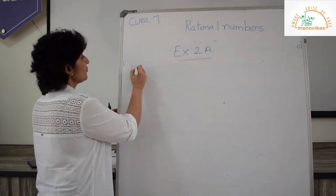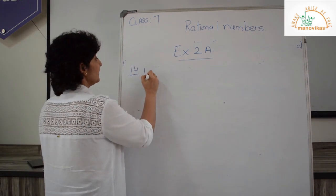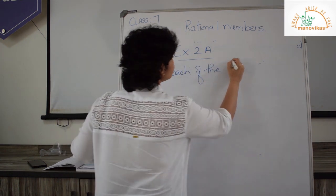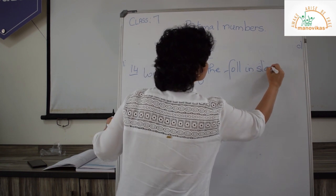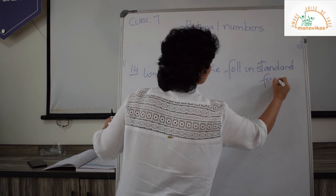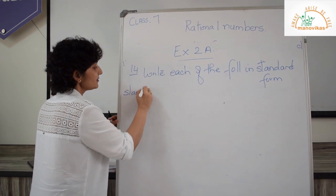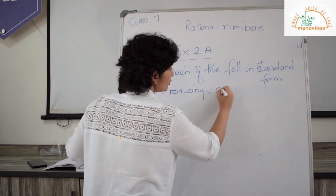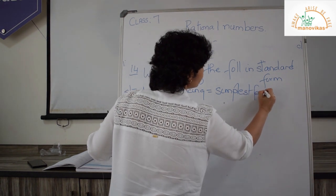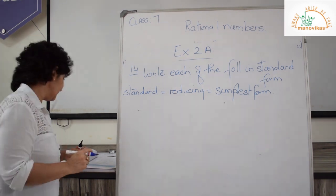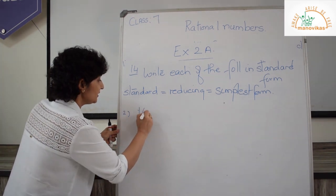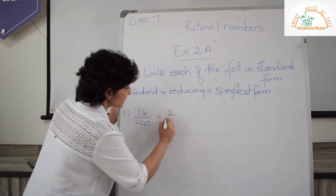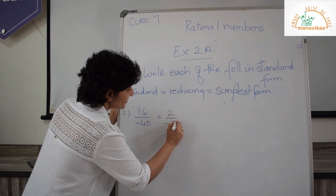Let's go to question 14 of Exercise 2a: write each of the following in standard form. Remember, when they say standard form, this also means reducing — bringing it to the simplest form. From question 14, let me do the second sum: 16 upon minus 40. You know your tables — 8 twos are 16, minus 8 fives are 40 — so the answer is minus 2 upon 5.